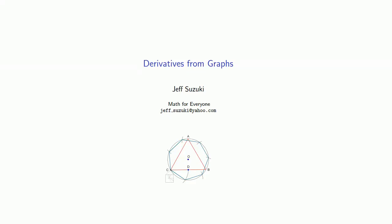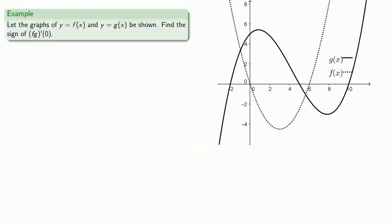Since the derivative gives us the slope of the line tangent to a graph, we can also use the graph to find the derivatives. For example, given the graphs of y equals f of x and y equals g of x, we can try to find the sign of the derivative of fg at 0. Remember this notation: this is the derivative of the function f of x times g of x evaluated at 0.